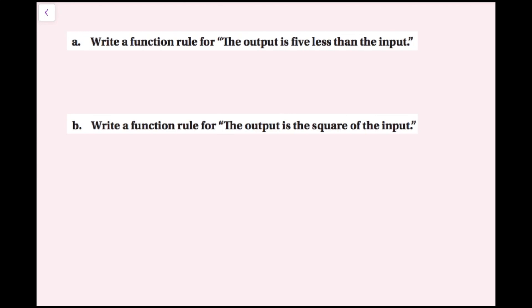In this example, we're going to be writing some function rules. For part A, it says write a function rule for 'the output is 5 less than the input.' The output is going to be my y value, 'is' means equals, and then 5 less than the input. The input is going to be x — the input is your independent variable. And 5 less than means you might think of subtracting, so you might think of 5 minus x, but it's actually going to be the other way around: x minus 5. So if I put that all together, I get y equals x minus 5.